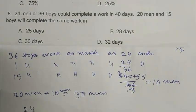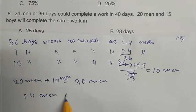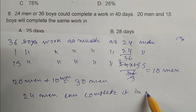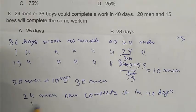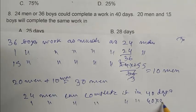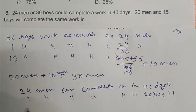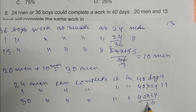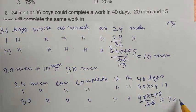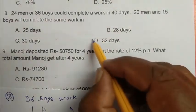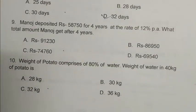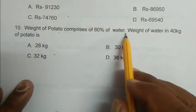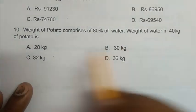One boy works as much as 24 by 36 men. 15 boys work as much as 2, 3, 5 that is 10 men. So if we replace 15 boys by men we got 20 men over there and by replacing 15 boys we get 10 men. So there is 30 total men. So 24 men can complete it in 40 into 24 days.